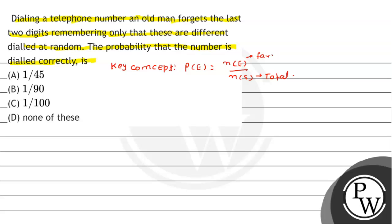अब देखिए, digits जो होते हैं, total 10 digits होते हैं: 0, 1, 2, 3, 4, 5, 6, 7, 8 and 9. यह हमारे पास 10 digits हैं। तो last two digits जो dial करना है, उन दो जगहों को भरना है।